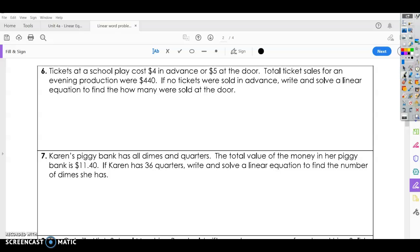Alright, the next question says, tickets at the school play cost $4.00 in advance or $5.00 at the door. So again, we can determine which we choose. We can say X equals the number of tickets in advance. Alright, total ticket sales for an evening production is $440.00. If no tickets, that means zero tickets were sold in advance, write and solve a linear equation to find out how many tickets were sold at the door.